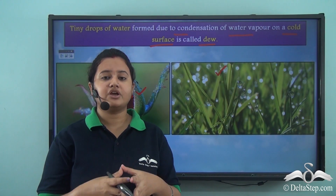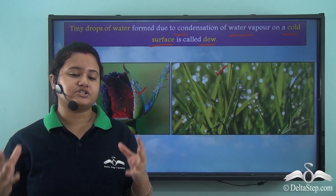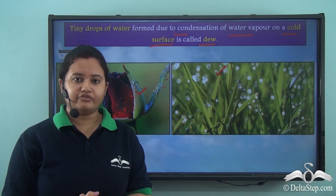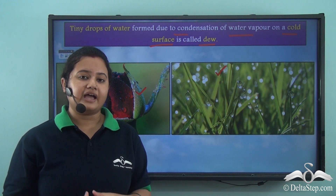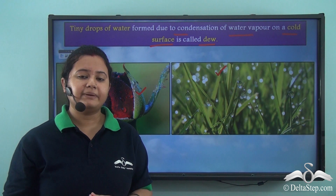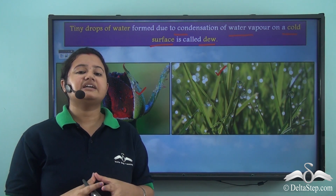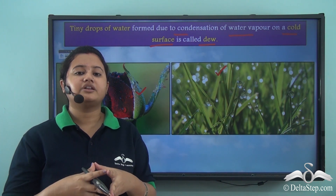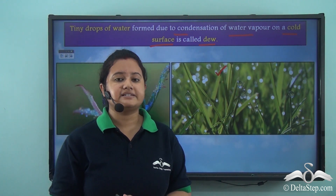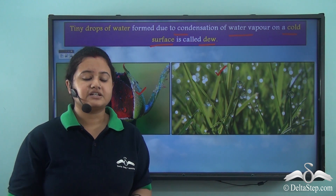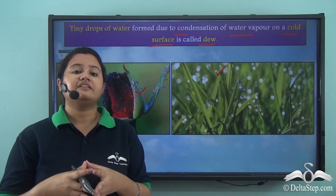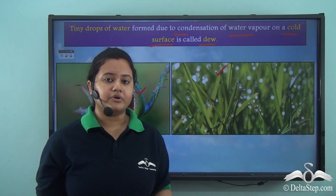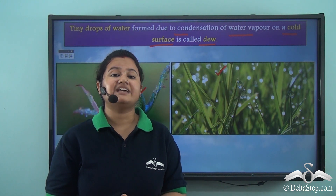Dew drops are most common on early mornings or at dawn when the sky is clear. If the sky is clear, the earth's surface receives substantial heat from the sun and also loses heat rapidly at night. But if the sky is overcast with clouds, the clouds block the sun's rays during daytime and trap the sun's heat at night, so atmospheric conditions are not favourable for the formation of dew.